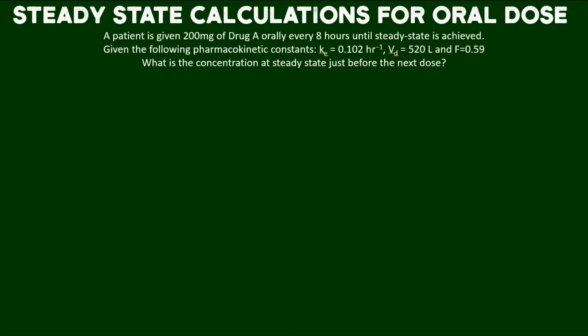Hi, everybody. Welcome back. In this problem, we're going to do steady-state calculations for an extravascular or oral dose. Here's the scenario: a patient is given 200 milligrams of drug A orally every eight hours until steady-state is achieved.